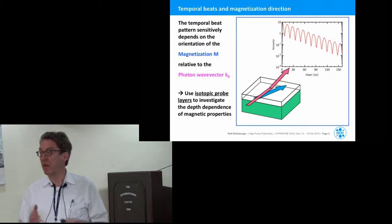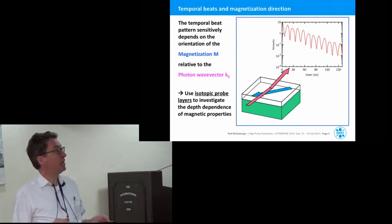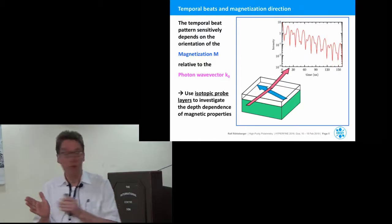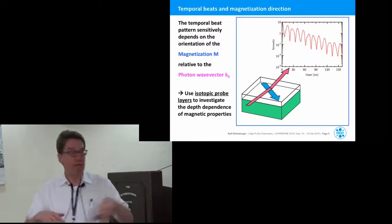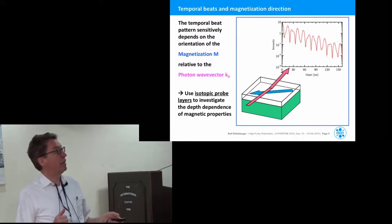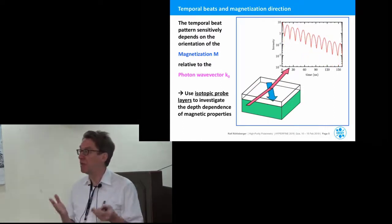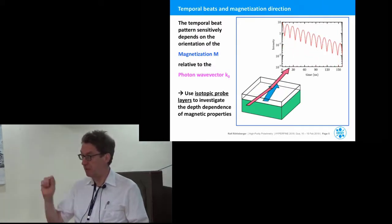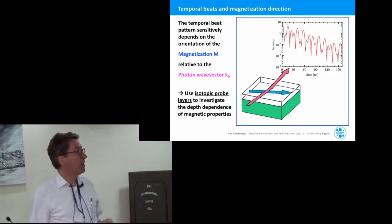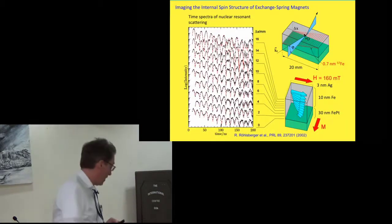This animation shows how this fingerprint depends on the relative orientation of the magnetic moments in your sample relative to the photon wave vector. A thin film is illuminated in grazing incidence geometry, and a magnetic moment rotates around the sample guided by an external field. The characteristic changes in the beat pattern can be used to determine magnetic orientation. Combined with isotopic probe layers selectively deposited into the thin film structure, one can investigate the depth dependence of magnetic properties with very high spatial resolution.